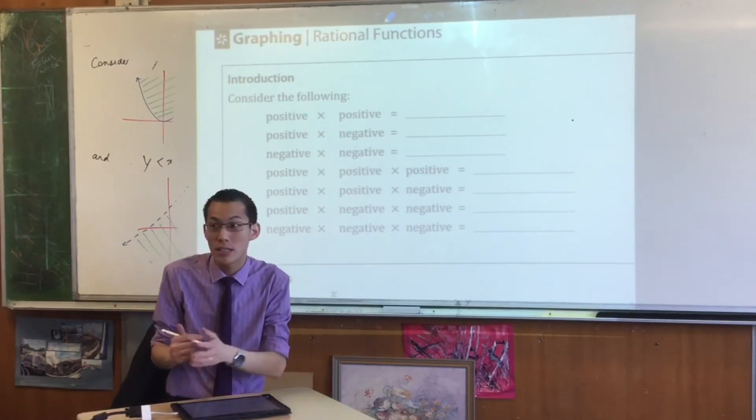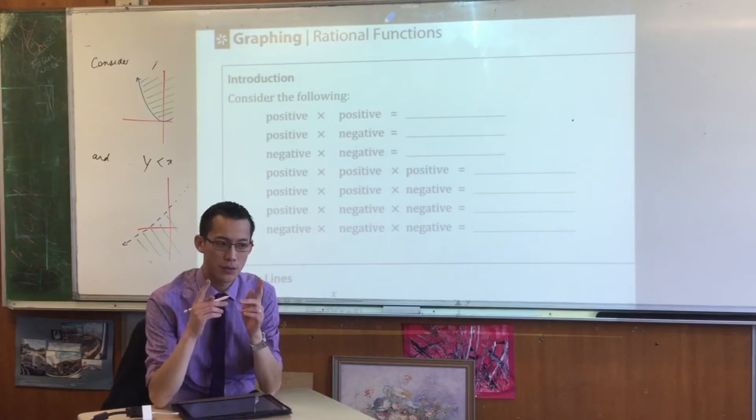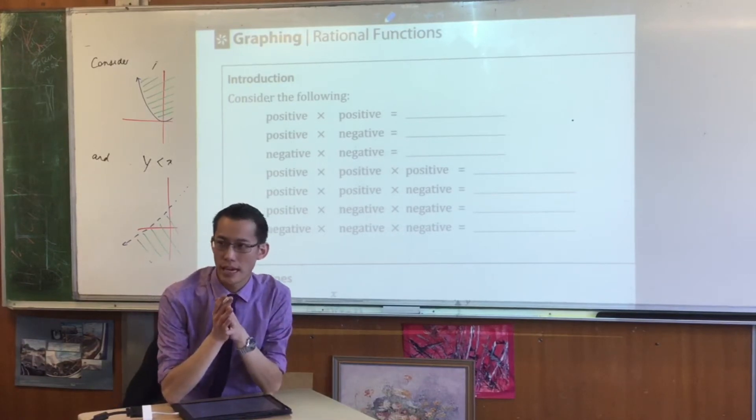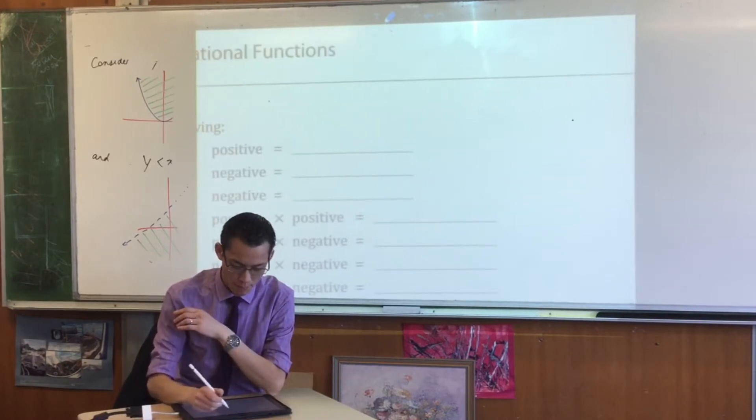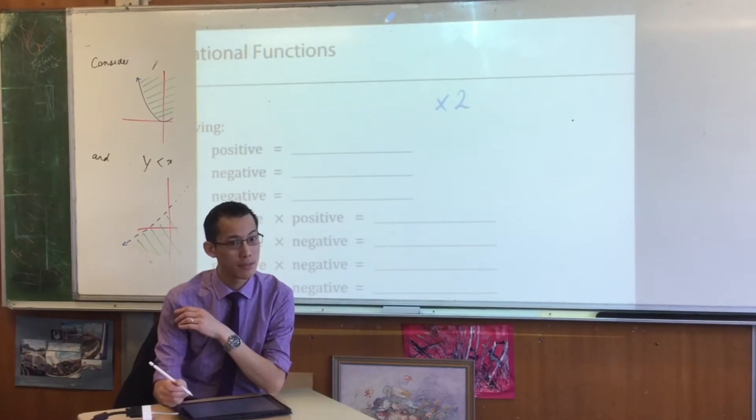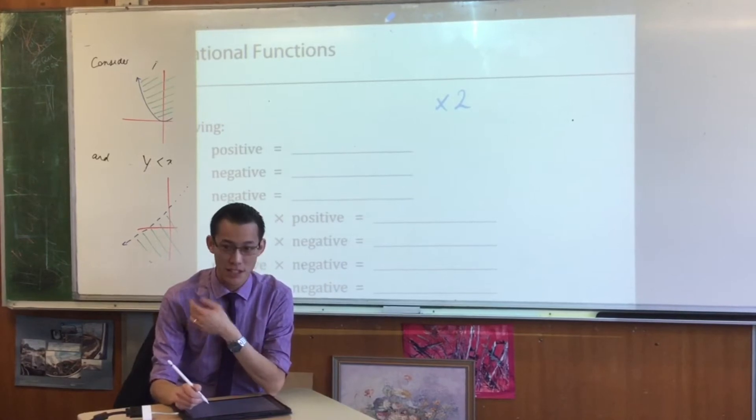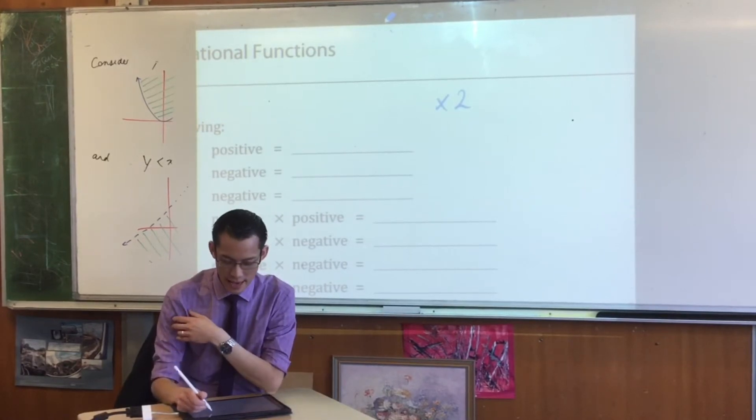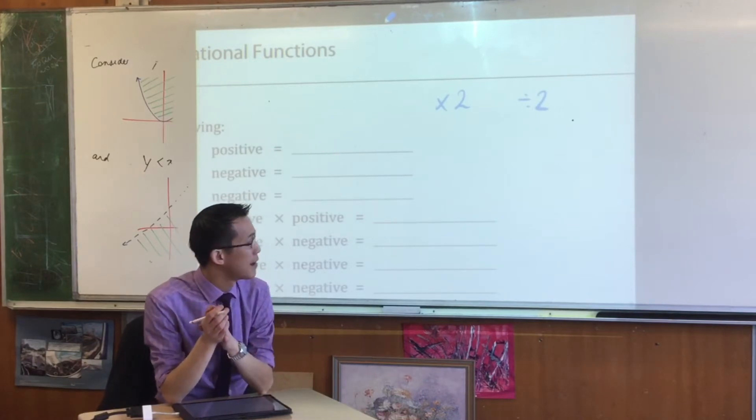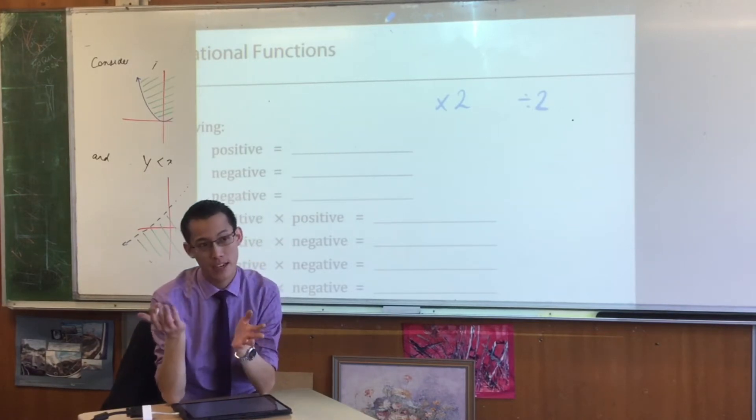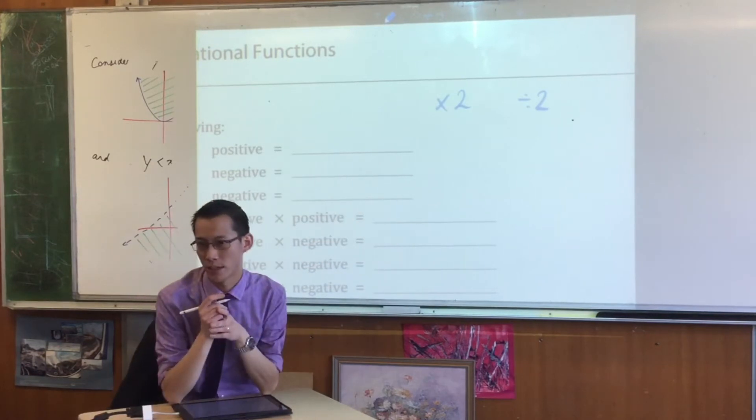All these multiplication signs could just as easily be division, because if you have a positive number its reciprocal will also be positive. So multiplying by a positive has the same effect on the sign as dividing by a positive—you still don't change the sign if you've got a positive number and still will change your sign if you have a negative number, regardless of which operation you're doing.